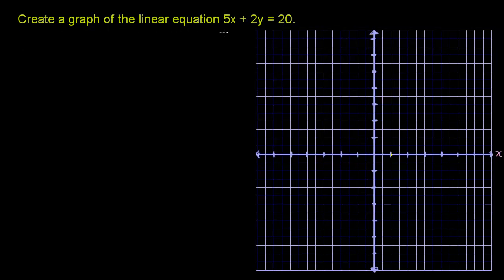Create a graph of the linear equation 5x plus 2y is equal to 20. So the line is essentially the set of all coordinates, all x's and y's that satisfy this relationship right over here.